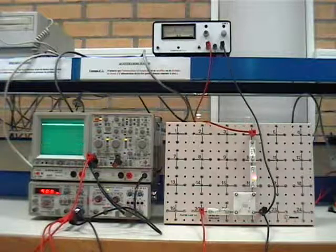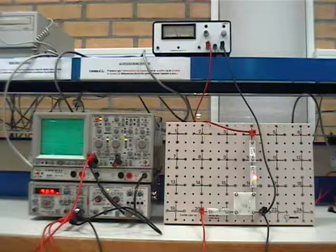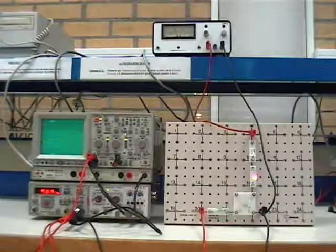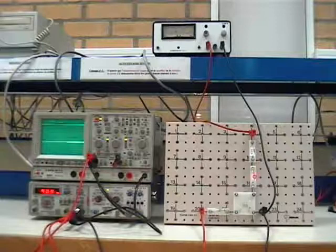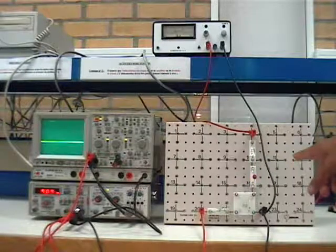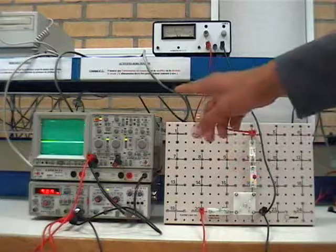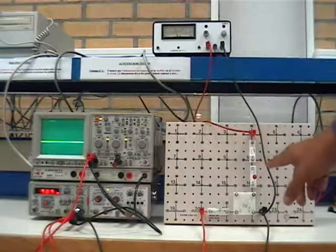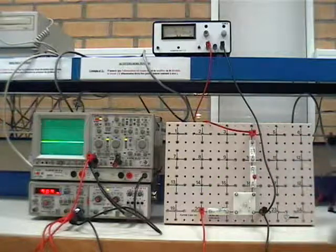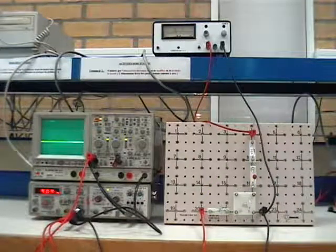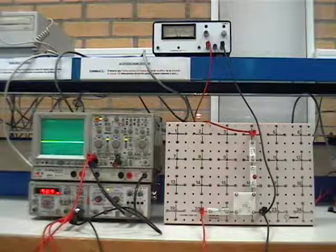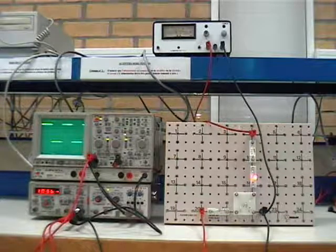The frequency of the generator is now adjusted to about 1 hertz. Now, watch carefully the lighting of the LED and also the input voltage of the base circuit. The unit is high.